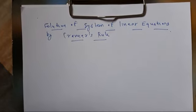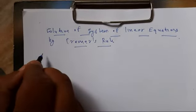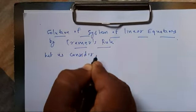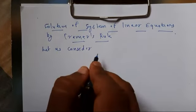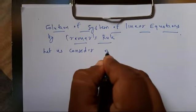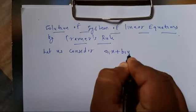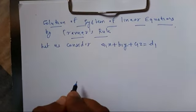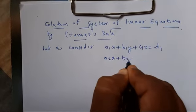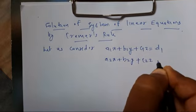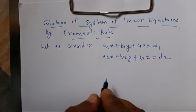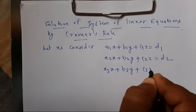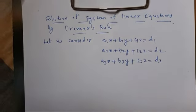First we will see the method, then we will go for the example. Let us consider a system of three linear equations: a1·x + b1·y + c1·z = d1, a2·x + b2·y + c2·z = d2, and a3·x + b3·y + c3·z = d3.